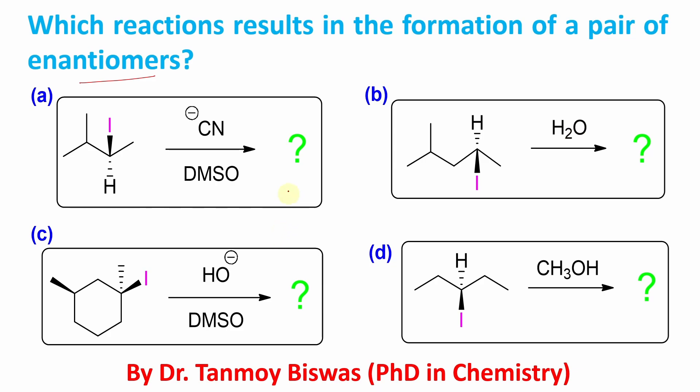So the question is associated with nucleophilic substitution, which has two mechanisms: SN1 and SN2. Now read the question: results in formation of a pair of enantiomers. In which mechanism is a pair of enantiomers produced? Actually we say in SN1 reaction, racemization is obtained.